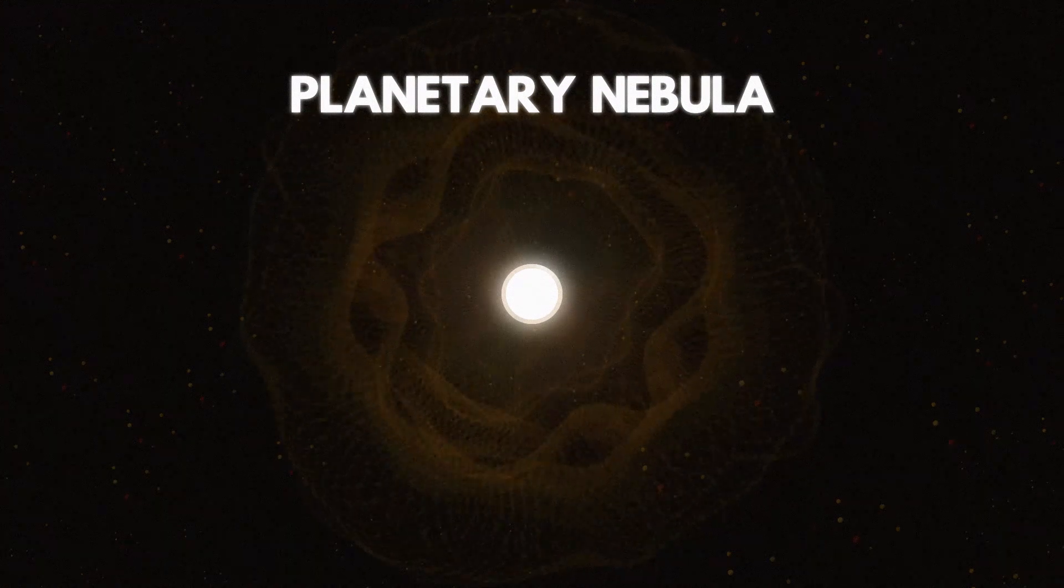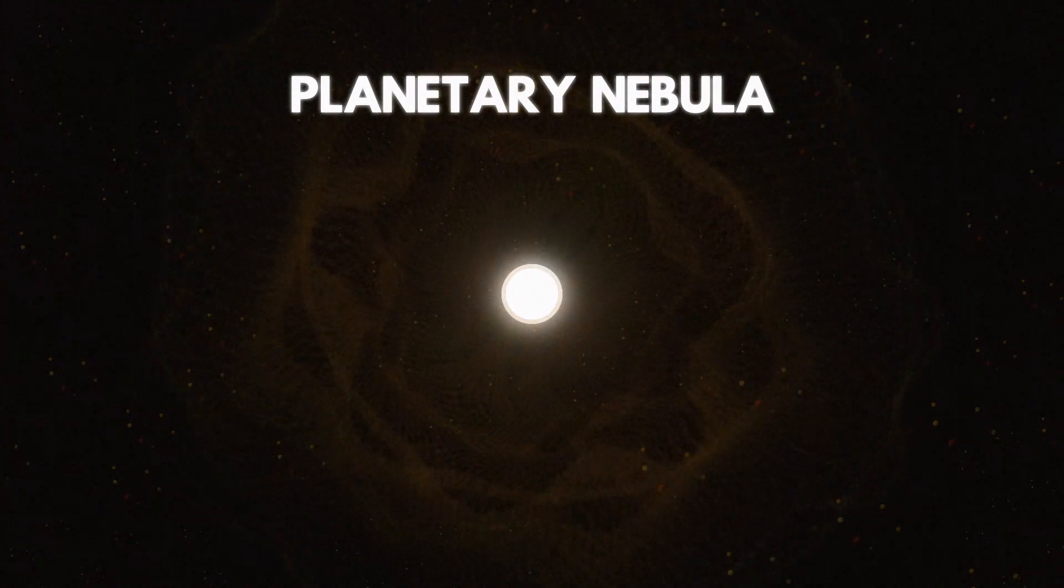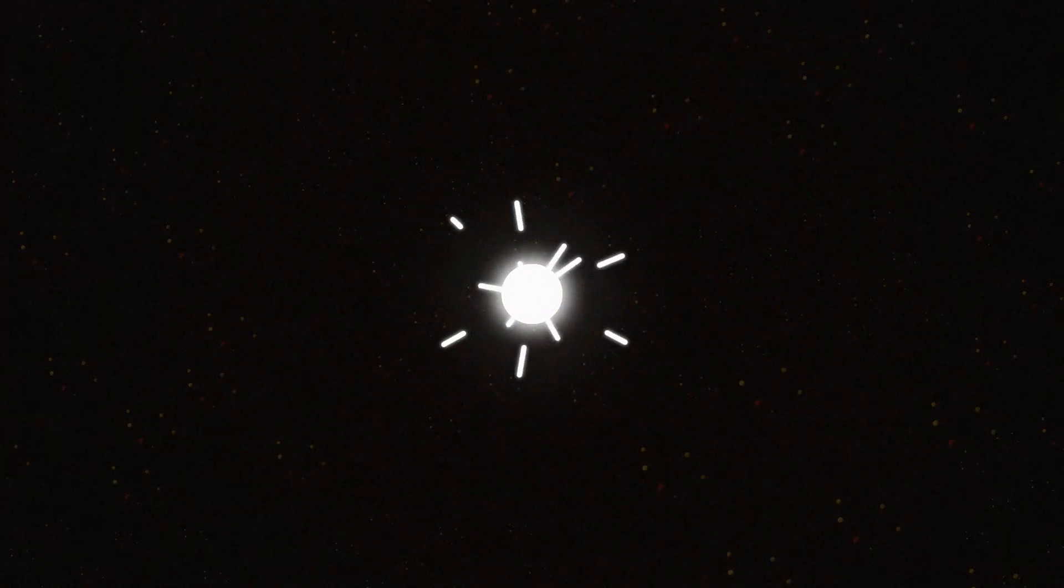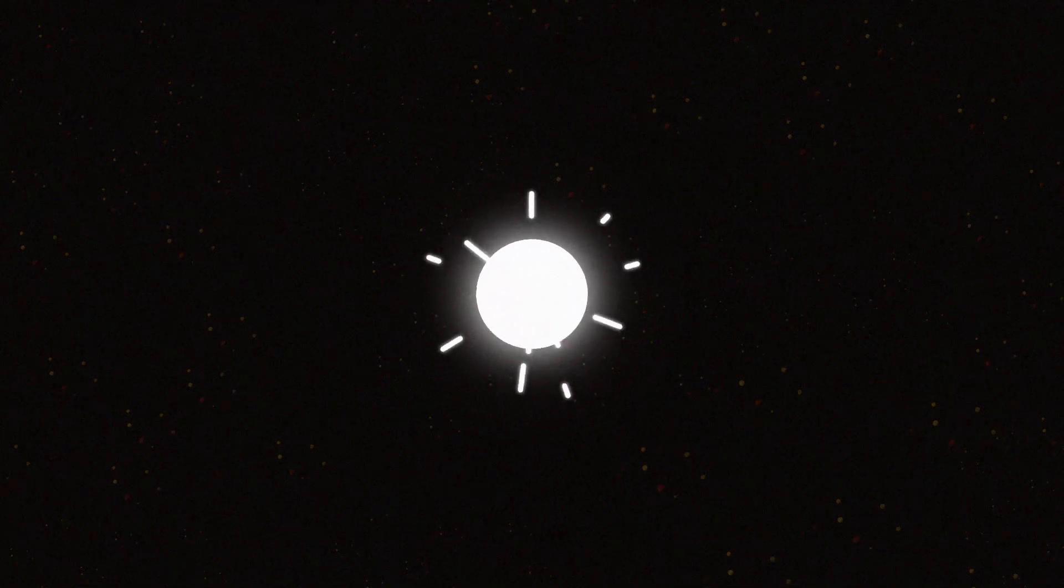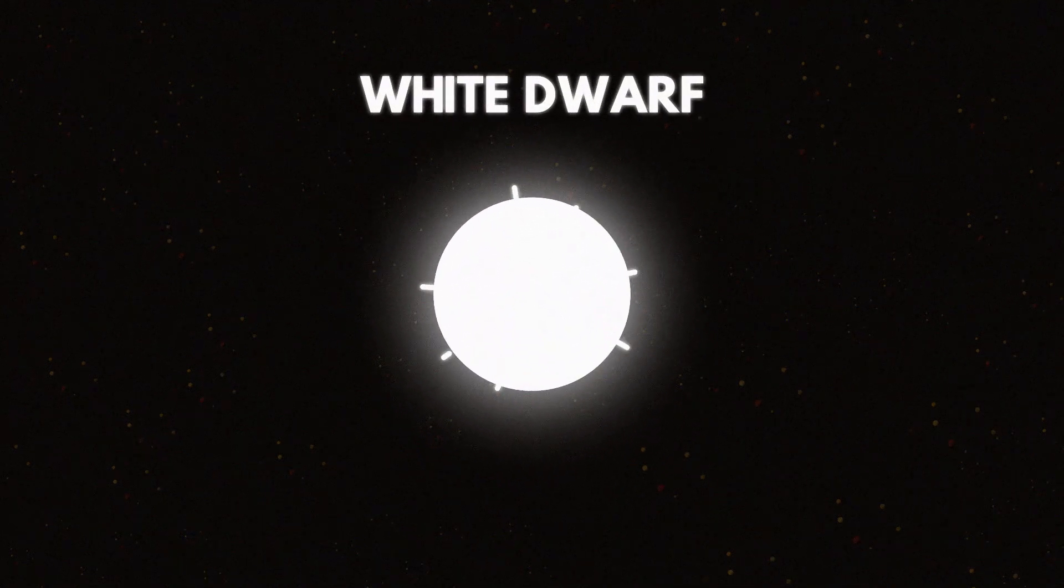Planetary nebulas last for a few thousand years. As the outer layers drift away from the star, the remaining core will shine brightly, and the hot core turns into a white dwarf.